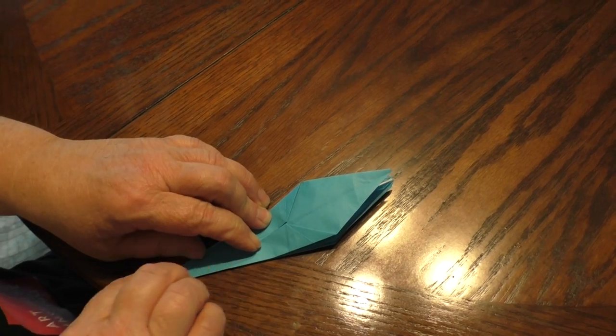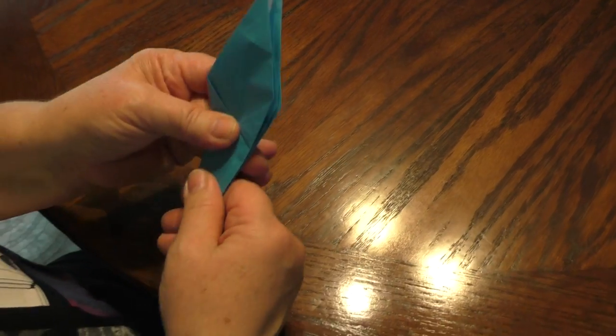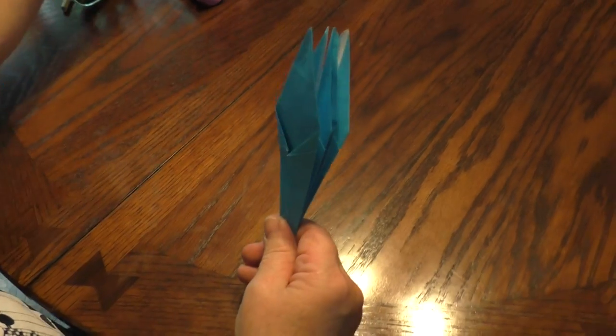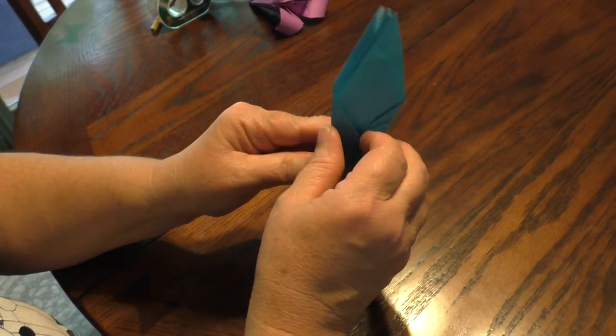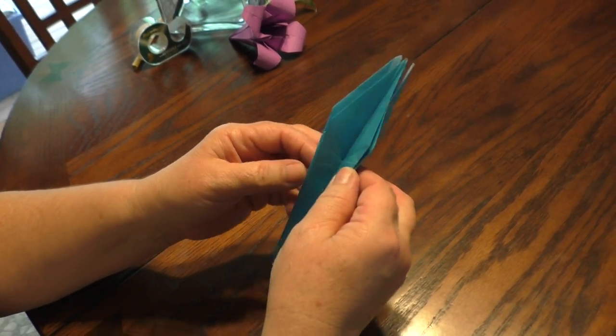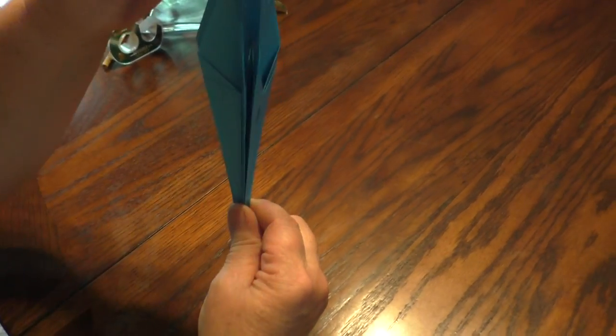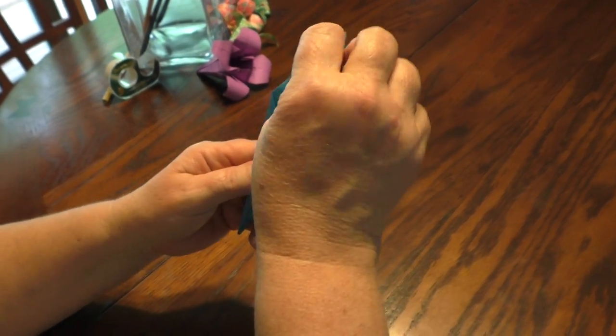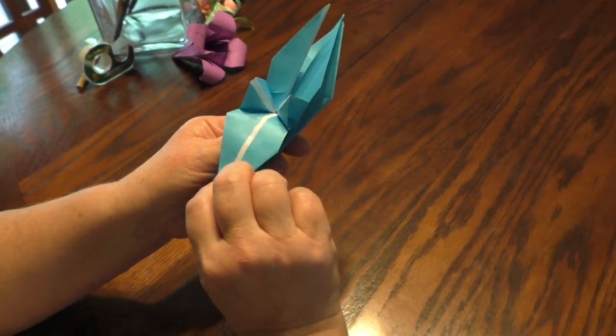Now, if you don't use origami paper, you could use white paper. You could spray paint it. I've spray painted a lot of these so far with gold and silver and all different colors. Here's your stem. Here's the top. Here's where you kind of peel it like a banana a little bit. I'm going to pull each one down.